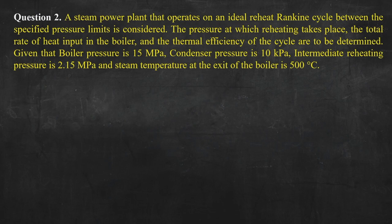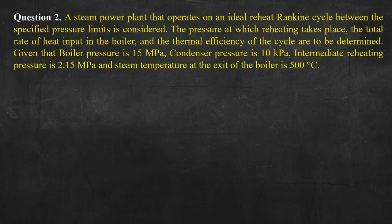It is given that a steam power plant operates on an ideal reheat Rankine cycle between specified pressure limits. The pressure at which reheating takes place, the total rate of heat input to the boiler, and the thermal efficiency of the cycle are to be determined. Given: boiler pressure is 15 MPa, condenser pressure is 10 kPa, intermediate reheating pressure is 2.15 MPa, and steam temperature at the exit of the boiler is 500°C.